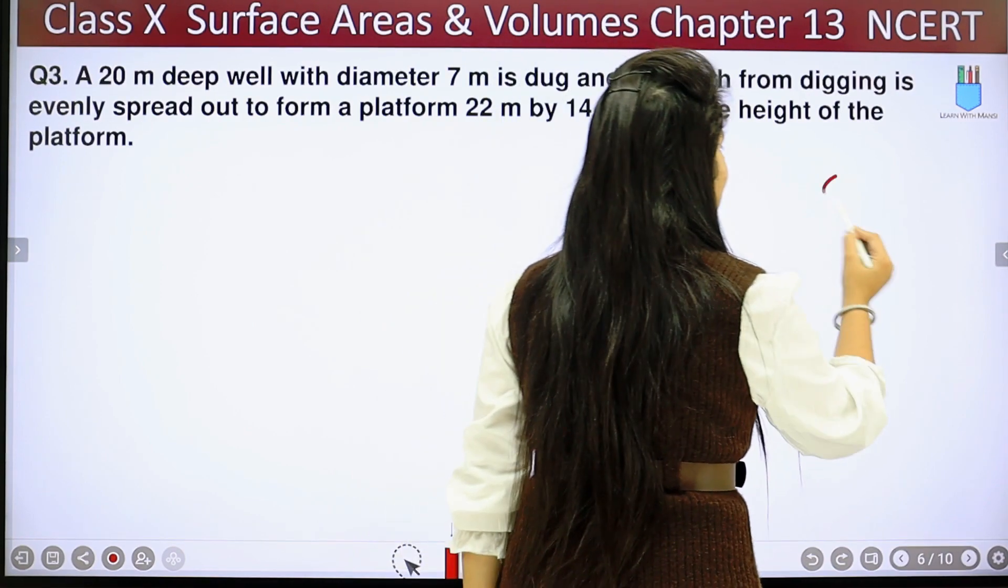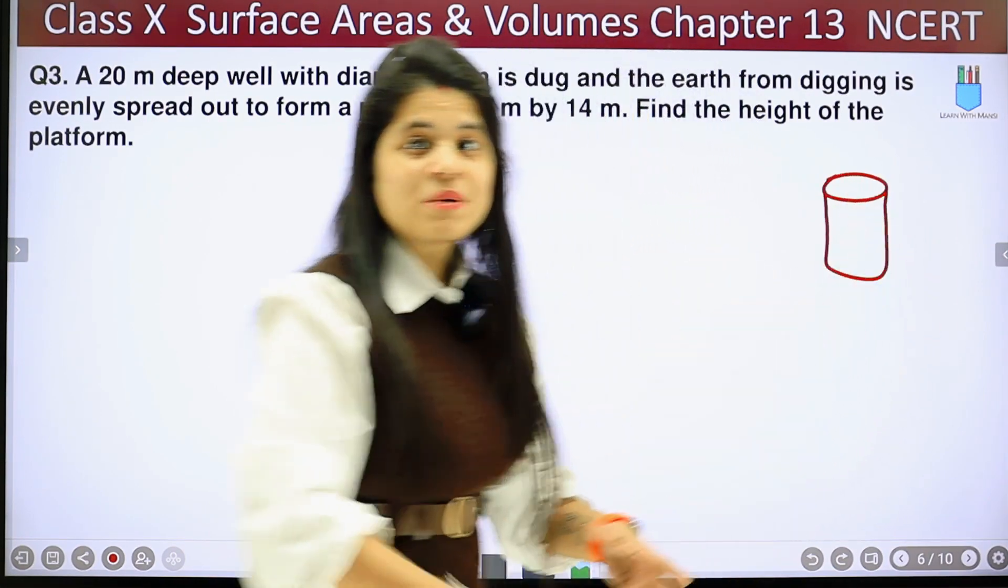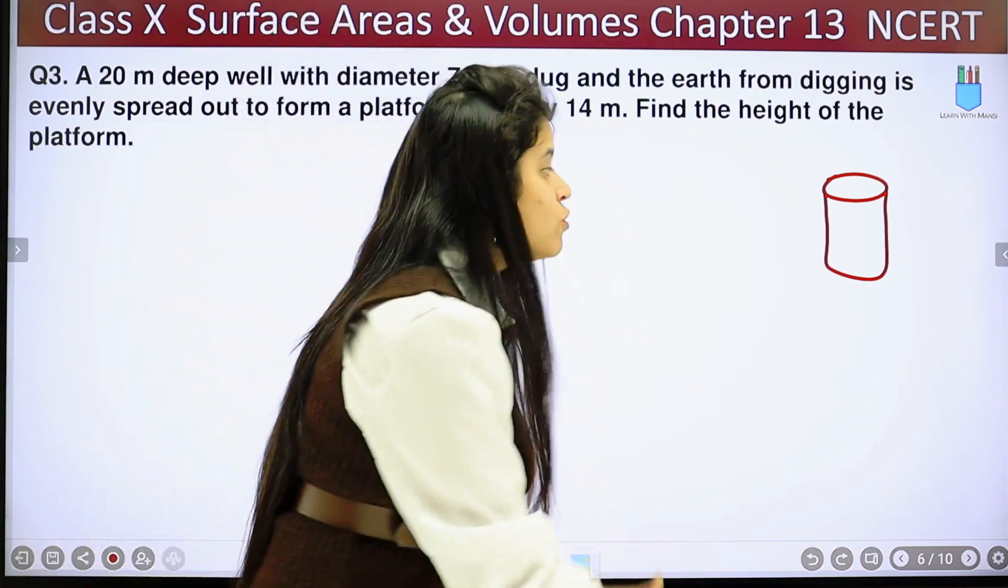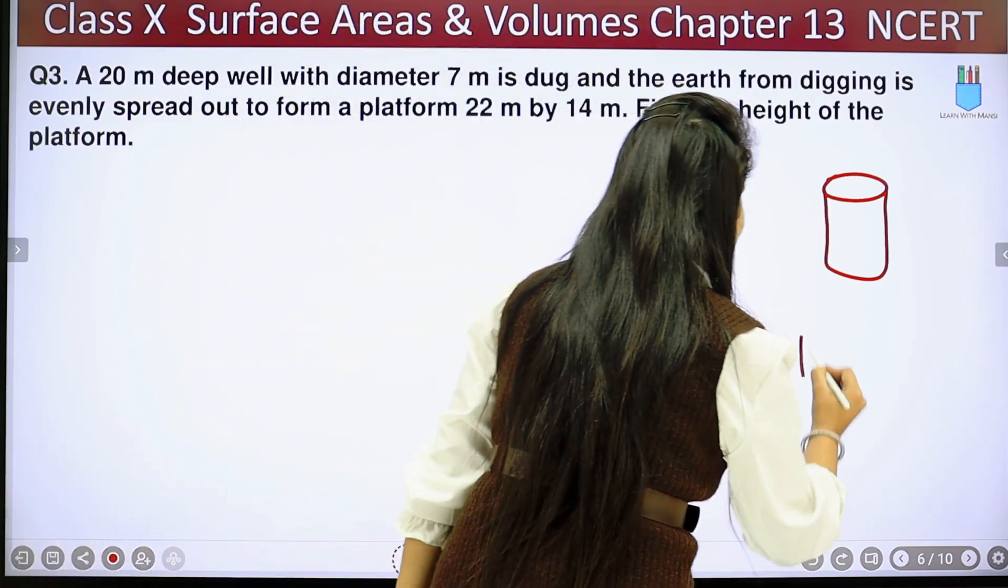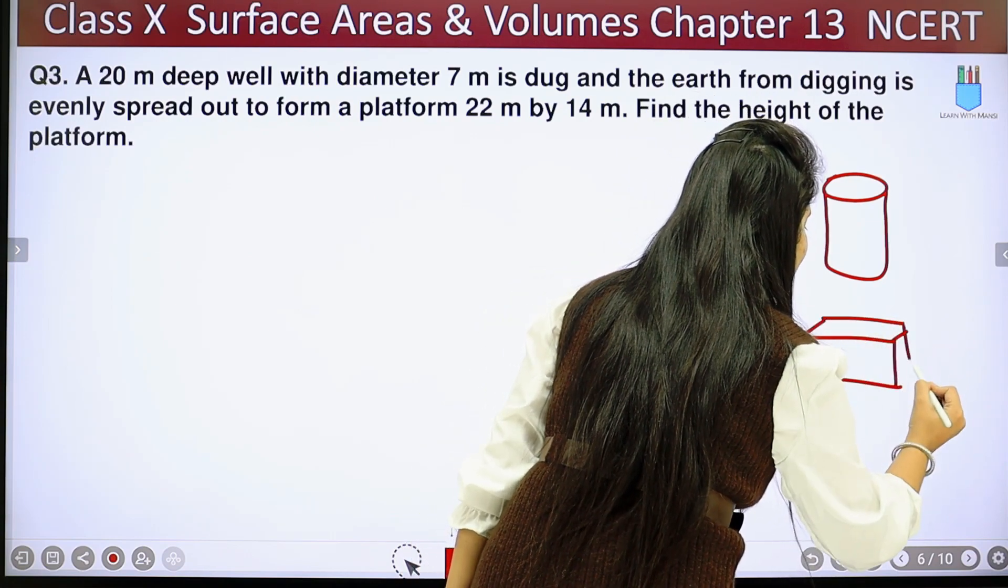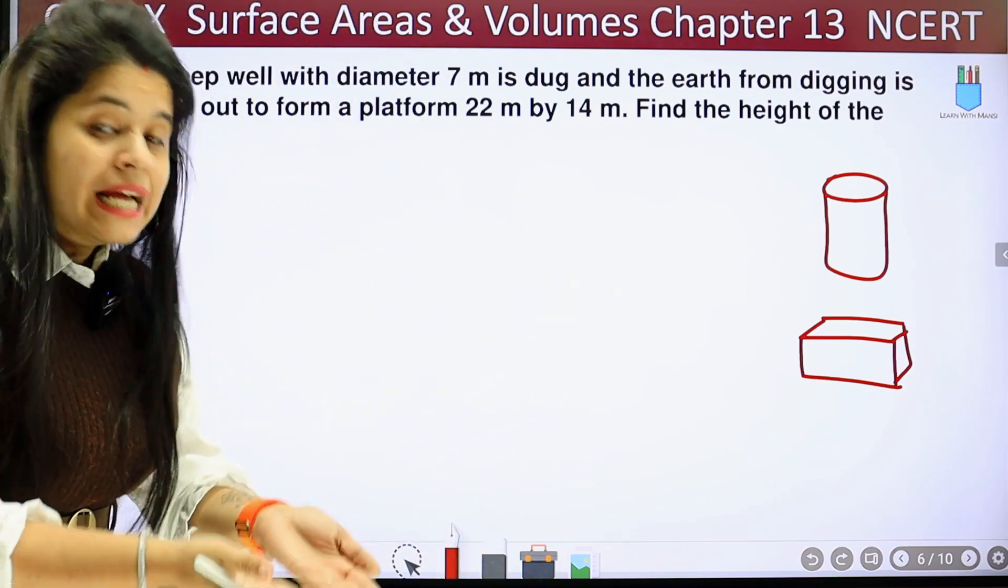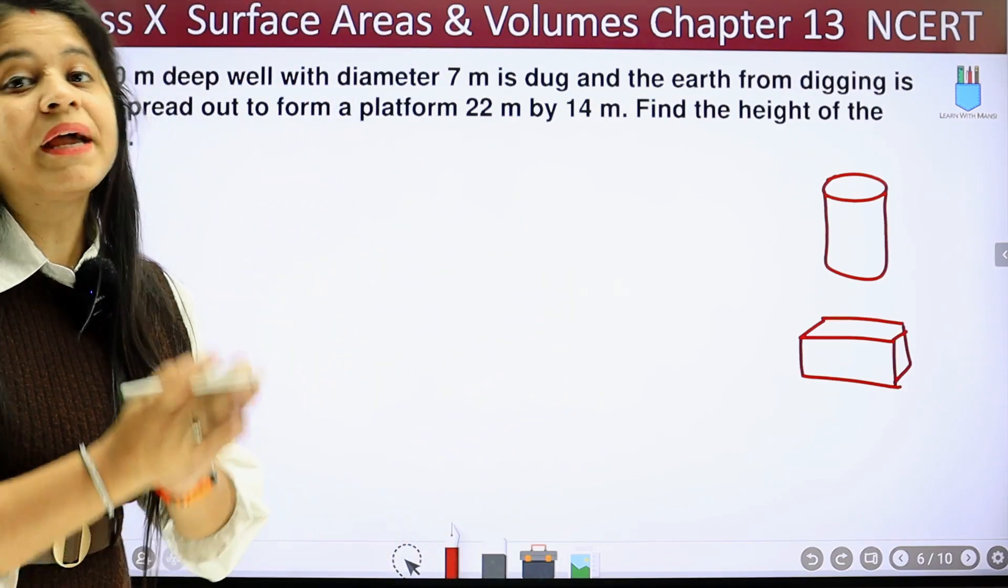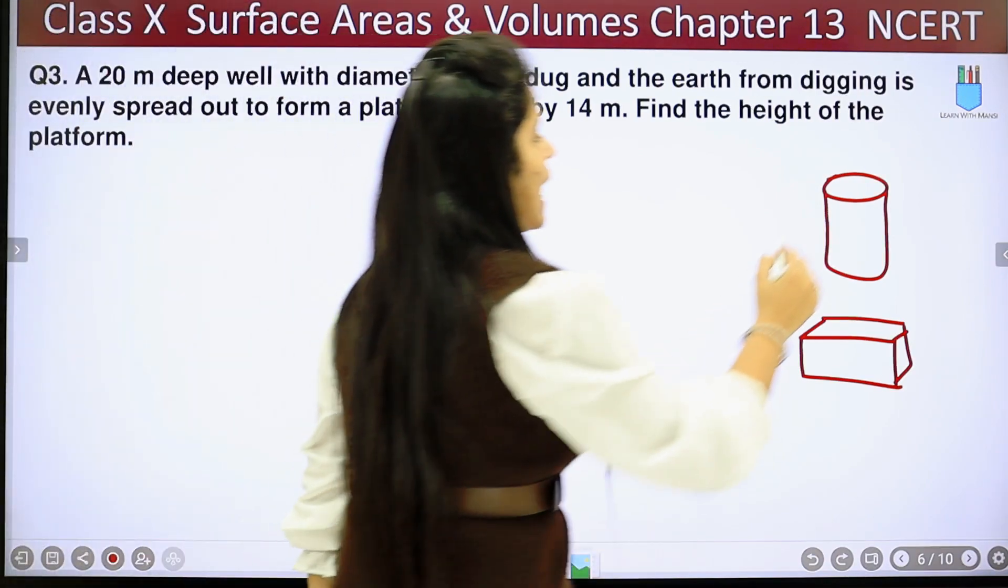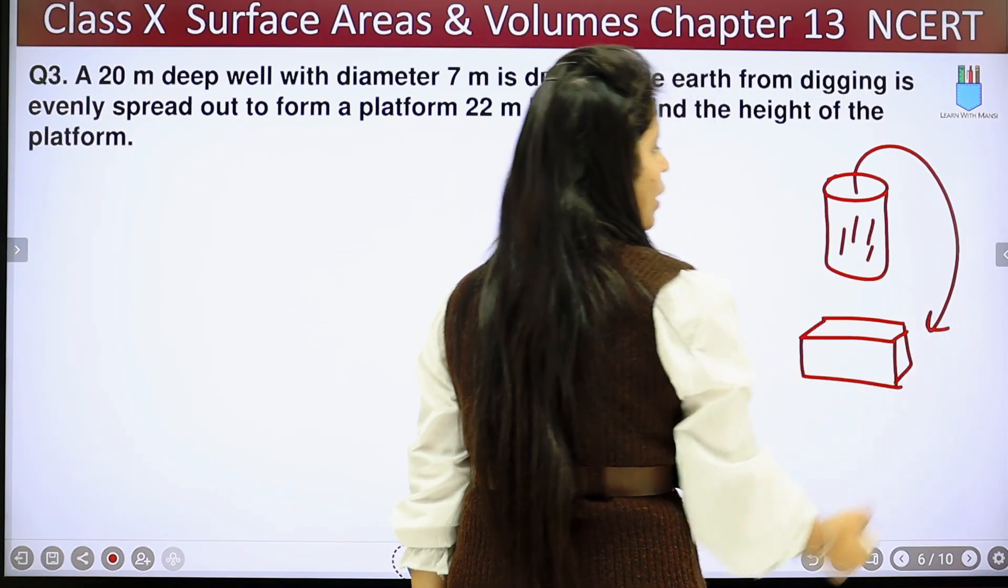Now see, a well is dug this way. The amount of earth that will come out here, the whole amount of the earth has made a platform which has become a cuboid form. Now the length and breadth is given. Its height is given as how much? It will be made to find out. Let's start with this. We know what is going on - that wherever it comes from inside, it becomes a cuboid.